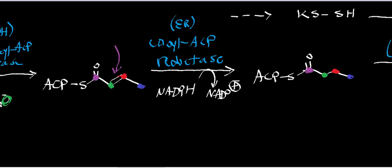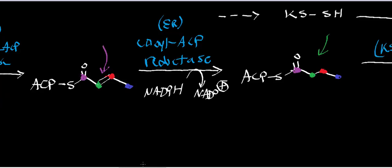Then we reduce that alkene down to an alkane in another NADPH-dependent reduction, catalyzed by enoyl-ACP reductase — the reverse of fatty acyl-CoA dehydrogenase in beta-oxidation. We've now taken two carbons from malonyl-CoA and two from acetyl-CoA and condensed them, giving us a four-carbon fatty acid.